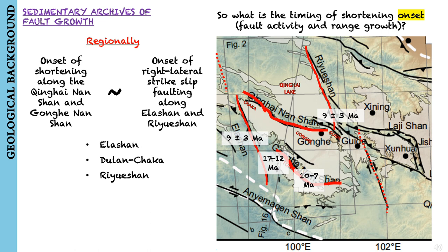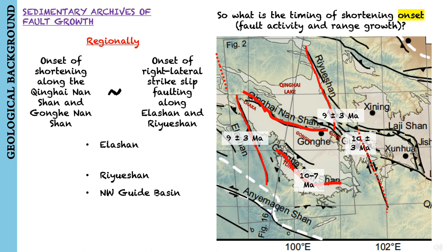All of these estimates are similar to the 10 plus or minus 3 million years ago initiation inferred for contractional structures along the northwestern margin of the Guaida Basin. In summary, geologic data consistently show that the initiation of shortening and strike-slip faulting in this part of northeastern Tibet occurred at around 7 to 12 million years ago, a few million years earlier in the Dulan-Chaka Highlands to the west, whereas in the Chaka Basin it started at 6 million years ago.